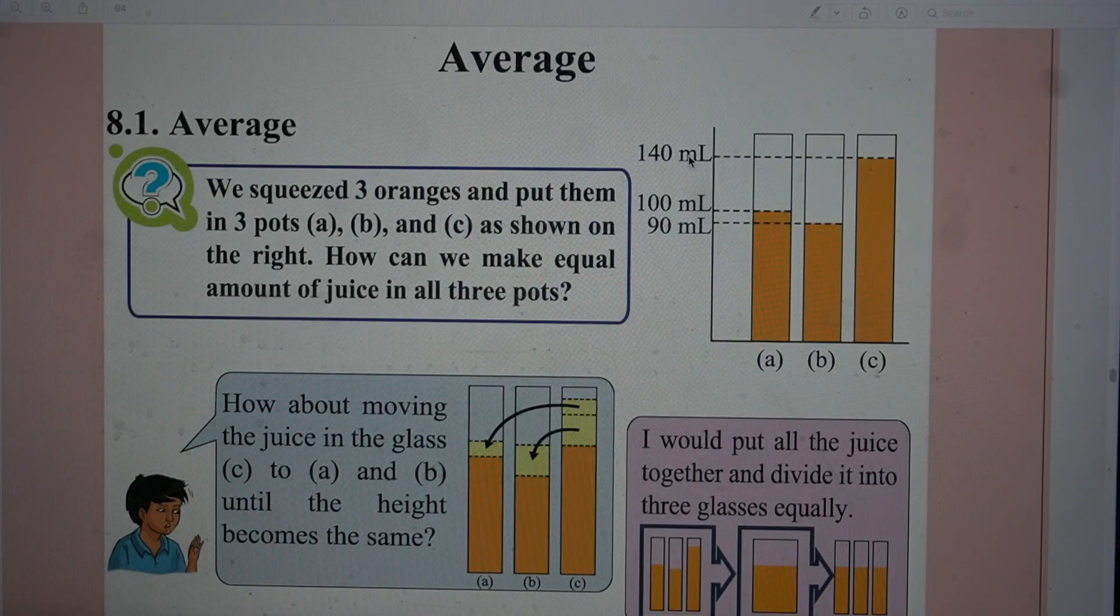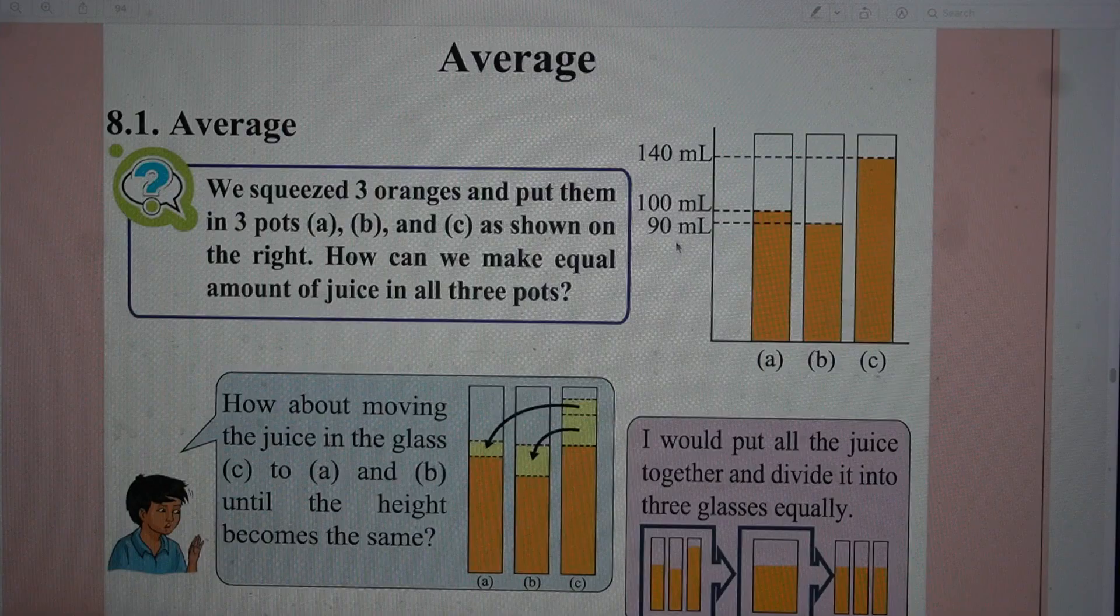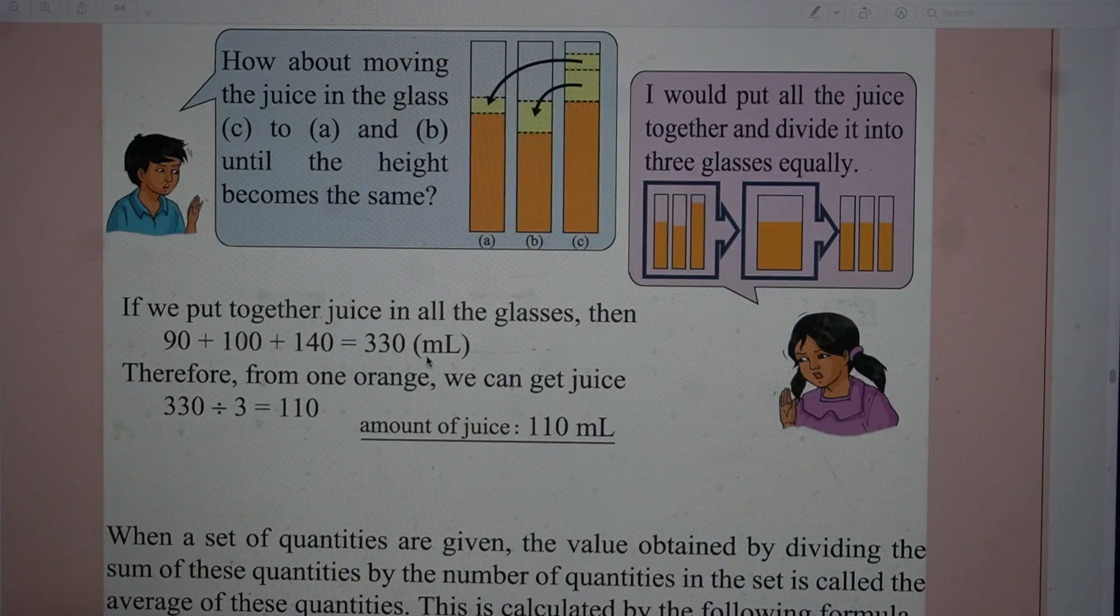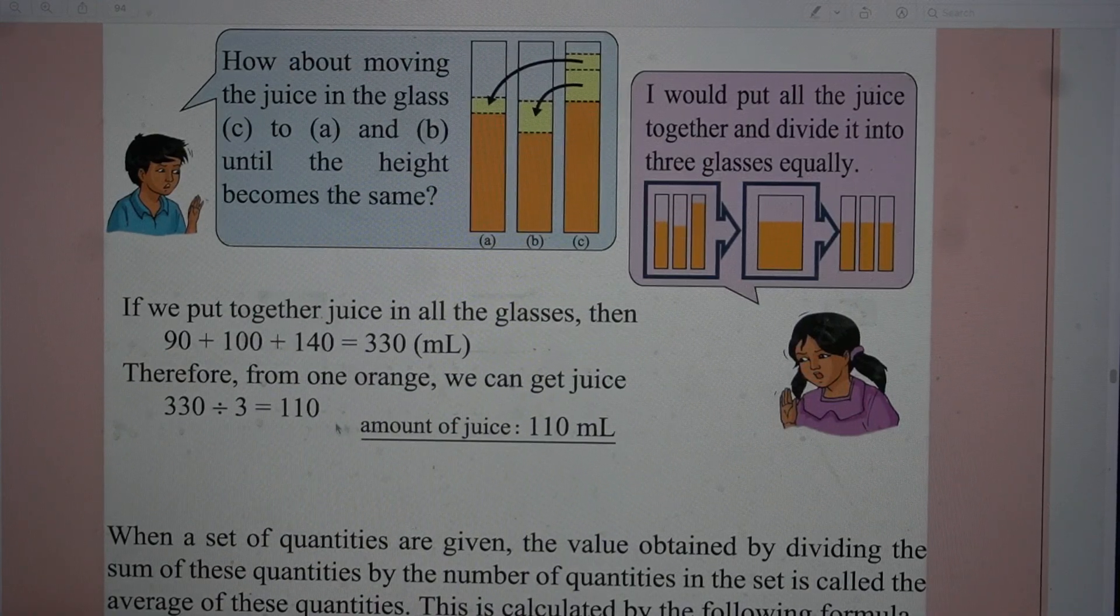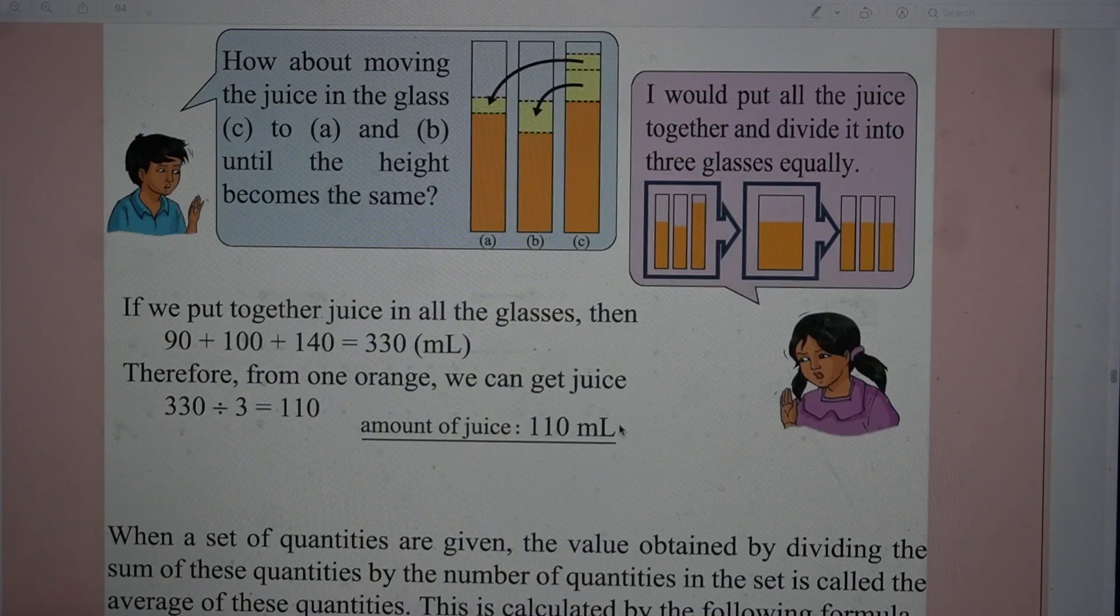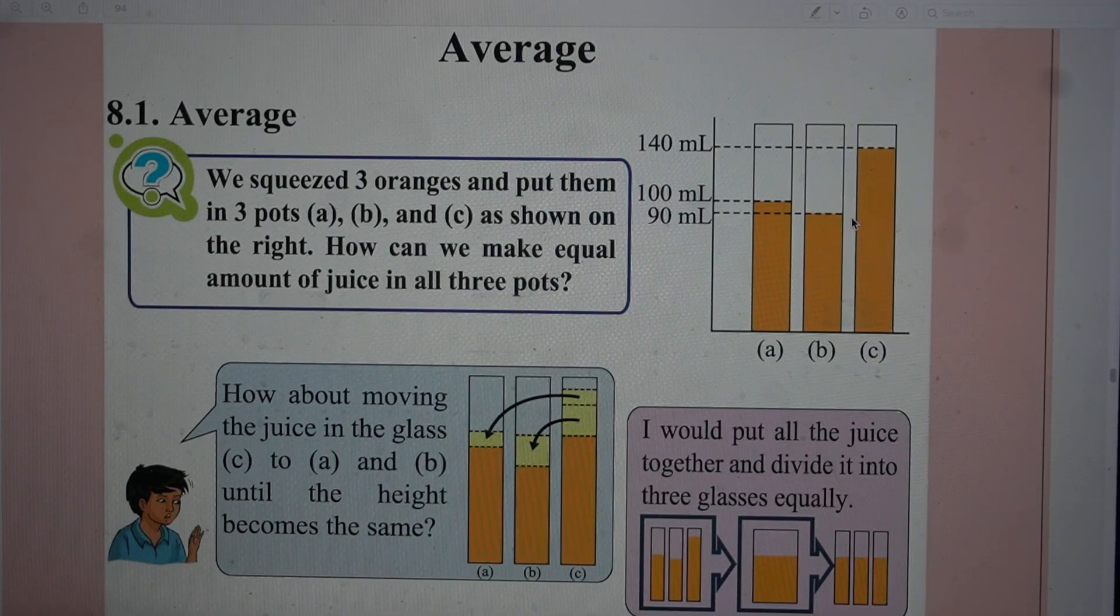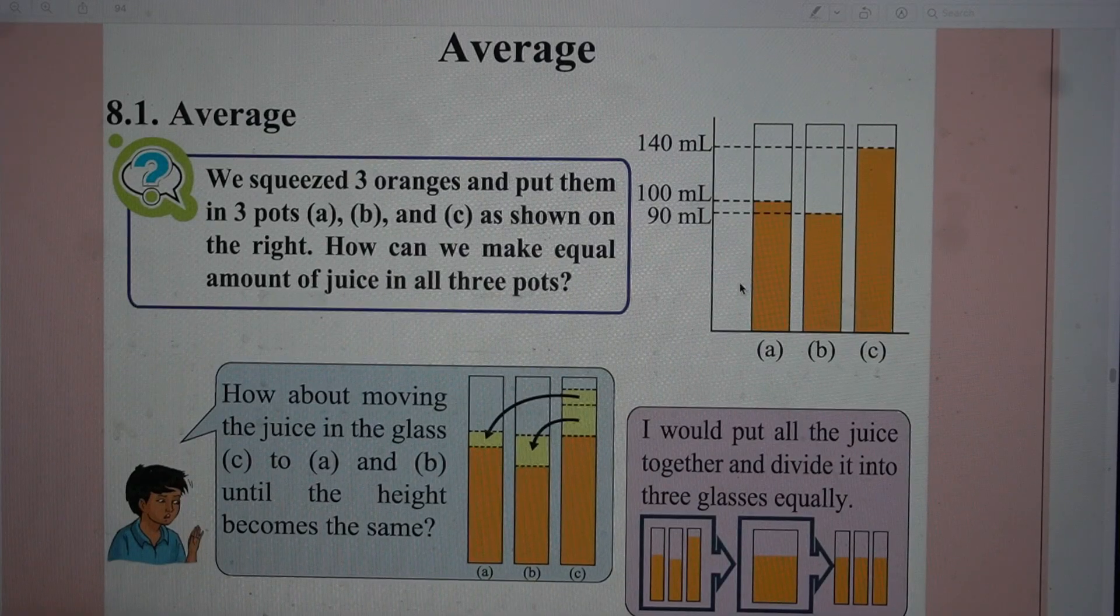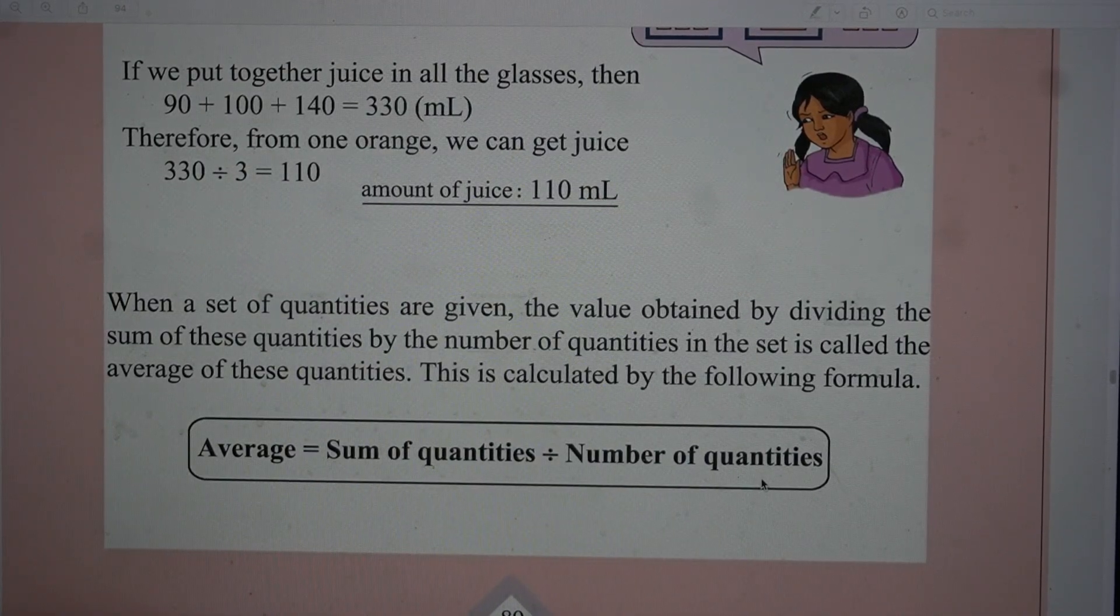So let's first find out the sum of these three: 140 plus 100 plus 90, which is 330 ml. If you make them equal, how much it would be in each glass? It will be 330 upon 3, that is 110. So the amount of juice in each glass will be 110 ml. This is nothing but average. The average formula is nothing but sum of the quantities upon the number of quantities.